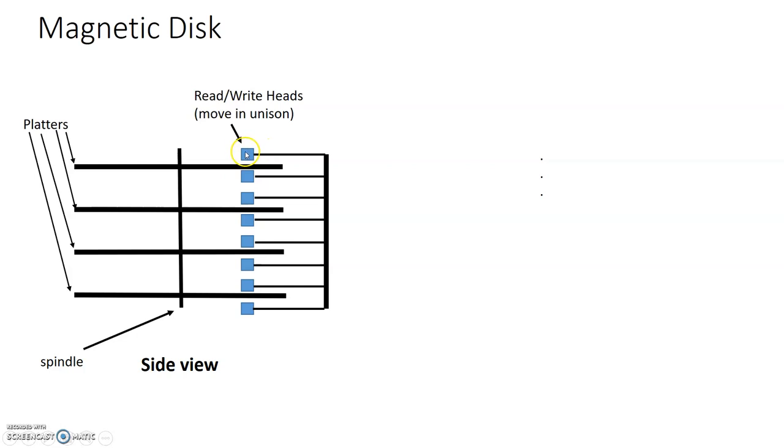So a read-write head for the top of this first platter, a read-write head for the bottom. A read-write head for the top of this platter, a read-write head for the bottom. And what will happen is the read-write heads will move in unison. So they will move to the same track. The collection of tracks at that point is known as a cylinder.